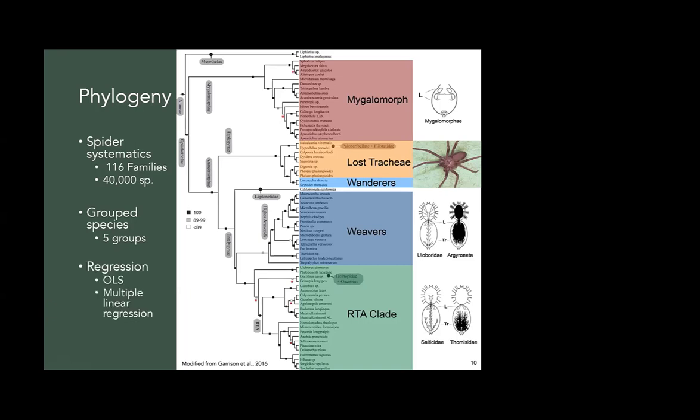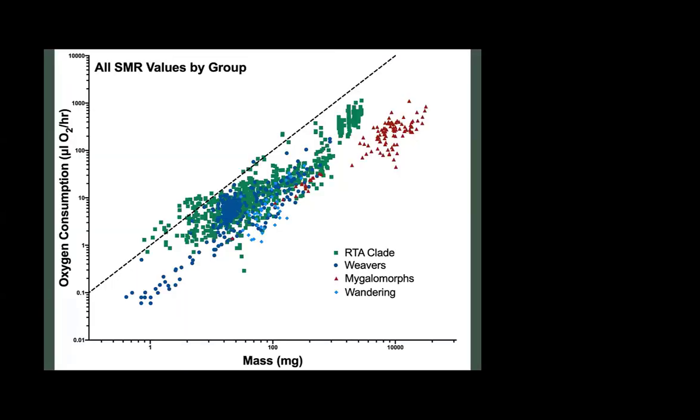So I did regressions of all of this data. I looked at multiple linear regressions. And this is the data, just oxygen consumption over here and mass. And these are log scale. So you can see the color coded data points. And you can see some of them are starting to group together. You can see that even when we don't correct for temperature or group.